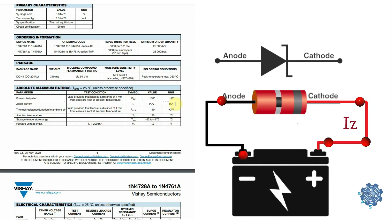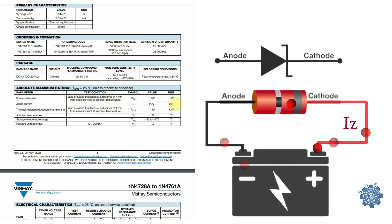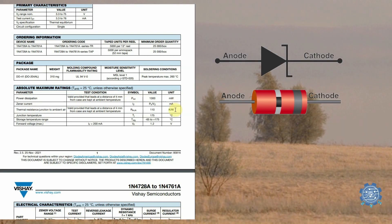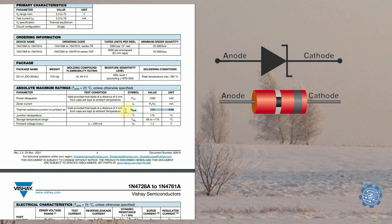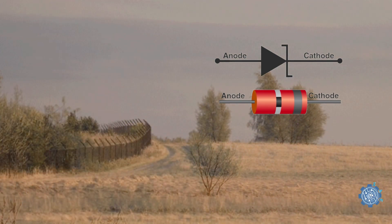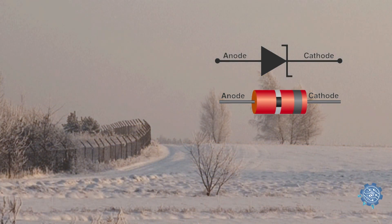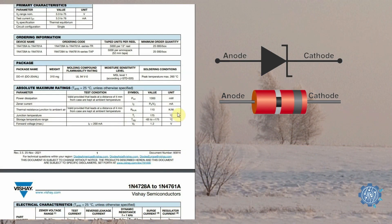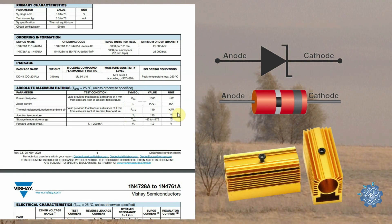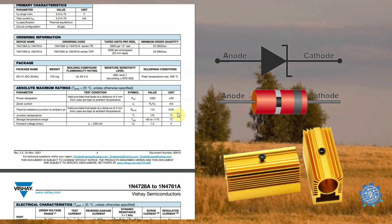It's important to note that the maximum power dissipation rating of a Zener diode depends on the ambient temperature and the thermal resistance of the package. Therefore it's important to ensure that the Zener diode is operated within its specified temperature range and that the package is properly heat synced to dissipate the heat generated by the diode.